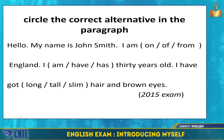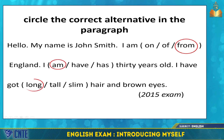Moving on to the second task: circle the correct word in the paragraph. The paragraph reads: Hello, my name is John Smith. I am from England — so we circle 'from'. Then: I am 30 years old — we circle 'am'. I have got long hair and brown eyes — so we circle 'long'.